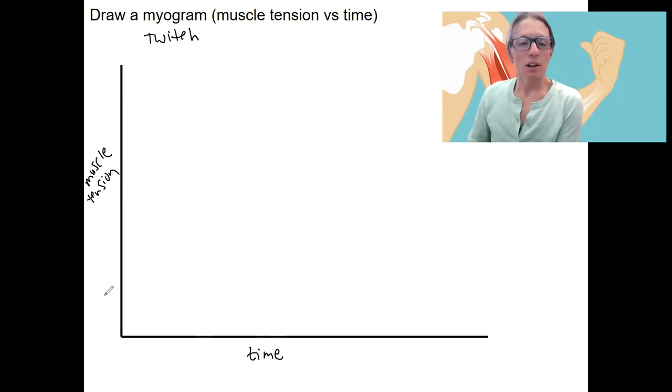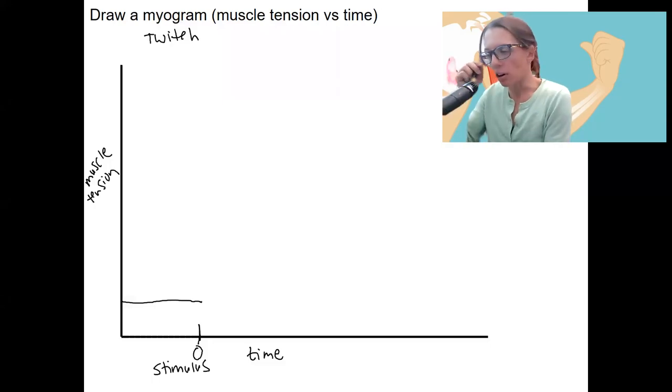Okay, so a single twitch, we are going to have some baseline amount of tension here. And let's say here is time zero. Doesn't matter what we call that. This could be minus one, this could be time one, but this is where a stimulus occurs. So if this was in a lab setting, it could be actually like firing electrical stimulation to cause a nerve to fire. Here's the stimulus, time zero.